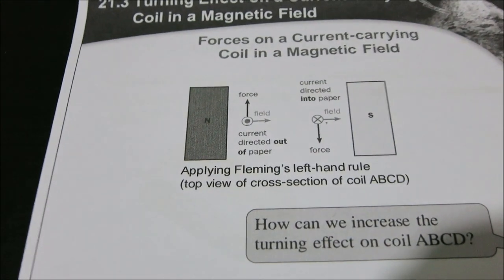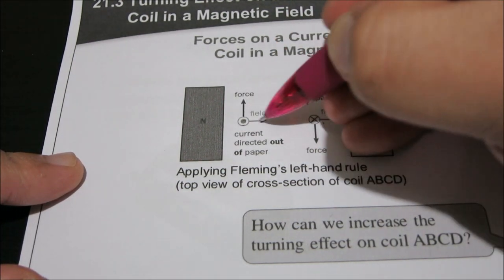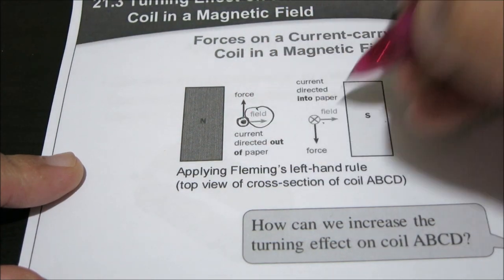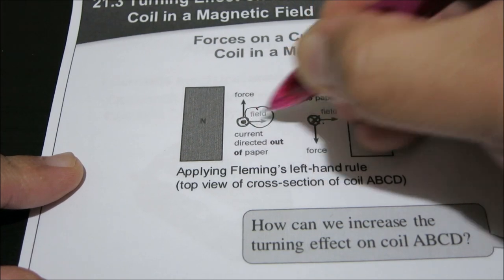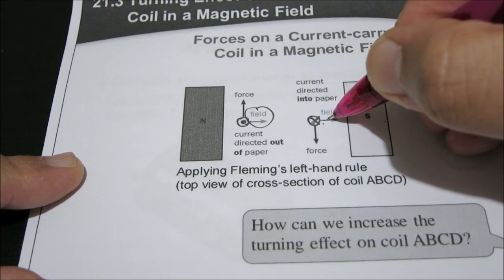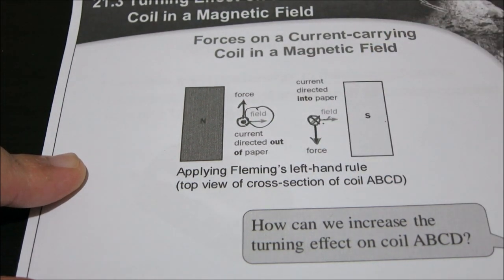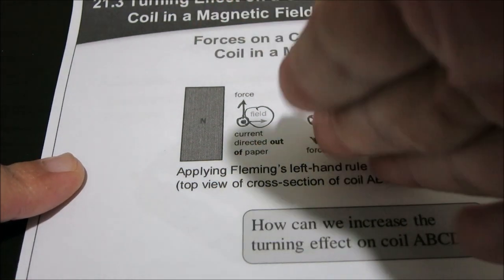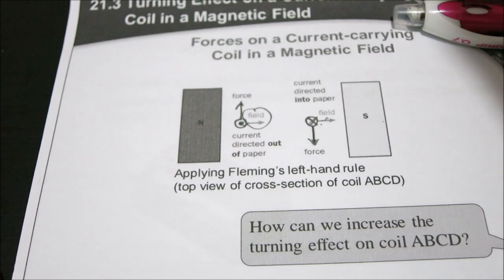Looking at it from a top view: the magnetic field points from north to south. The current is going out of the paper on one side and into the paper on the other side. The force felt on one side is upwards and on the other side is downwards. This causes the coil to rotate in that direction.